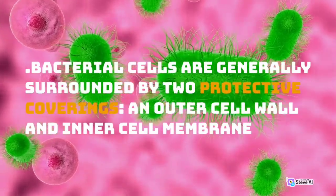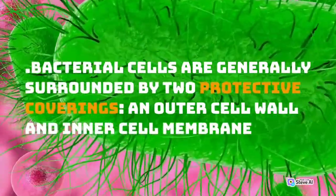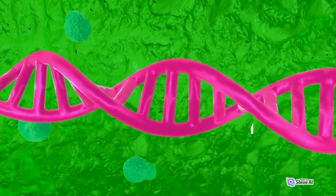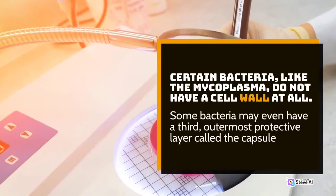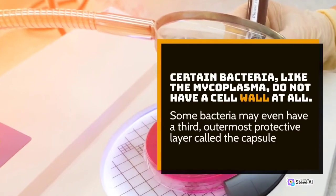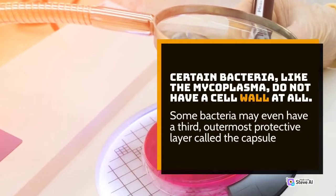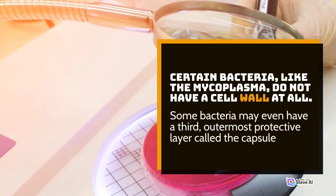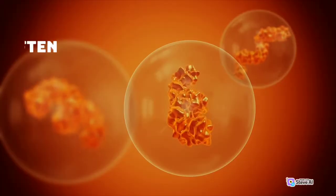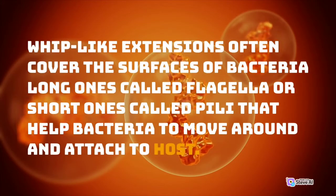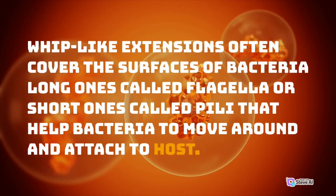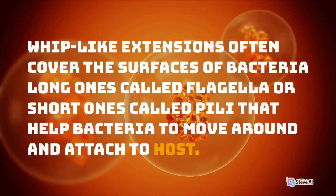Bacterial cells are generally surrounded by two protective coverings: an outer cell wall and an inner cell membrane. Certain bacteria, like the mycoplasma, do not have a cell wall at all. Some bacteria may even have a third, outermost protective layer called the capsule. Whip-like extensions often cover the surfaces of bacteria — long ones called flagella or short ones called pili — that help bacteria to move around and attach to a host.